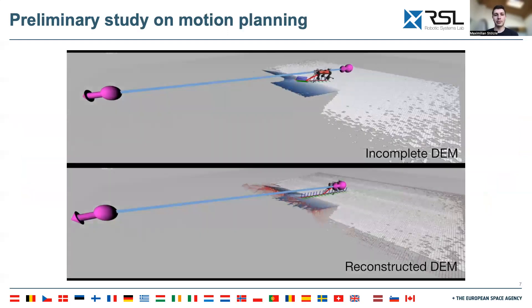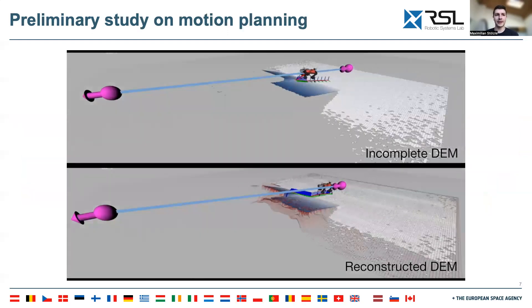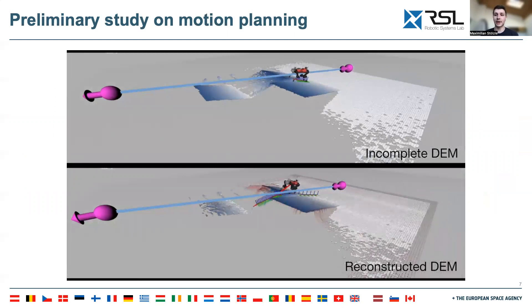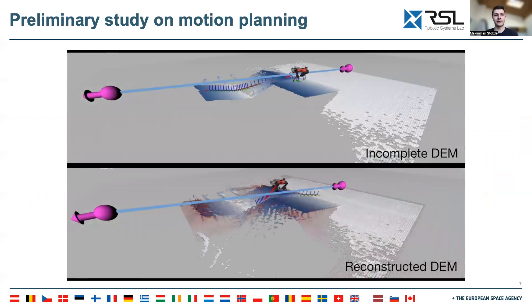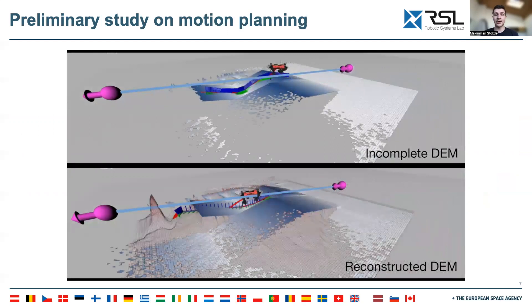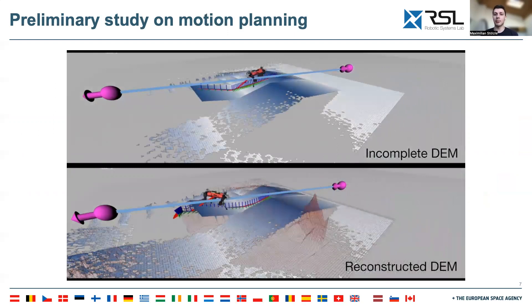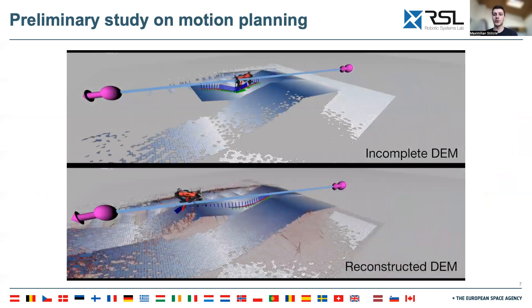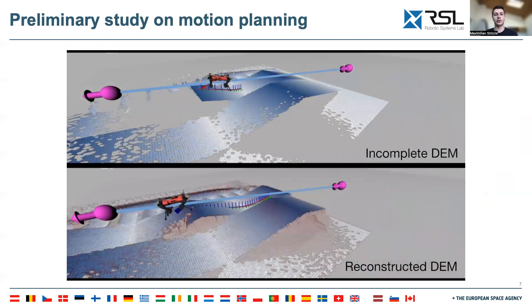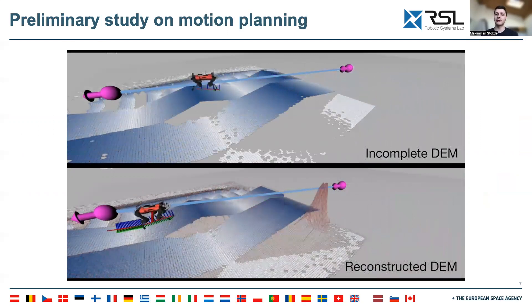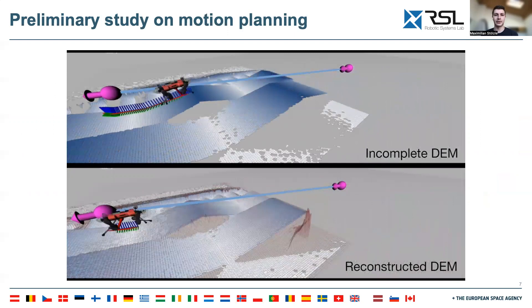On top we perform motion planning with incomplete DEMs; on the bottom, with our reconstructed elevation maps. Our preliminary experiments showed that planning enabled by our approach can reach further ahead and only needs to be slightly adjusted when the belief of the occluded area is updated.